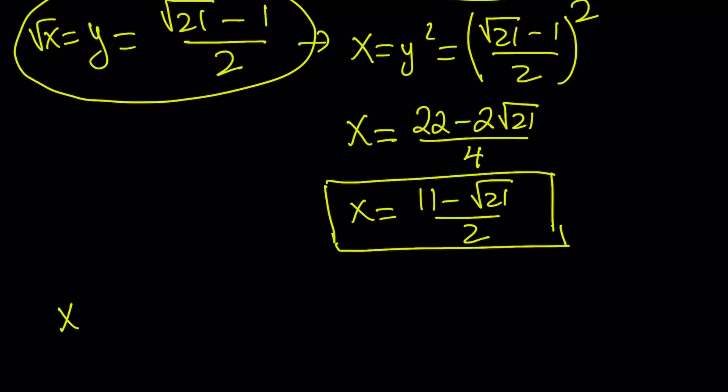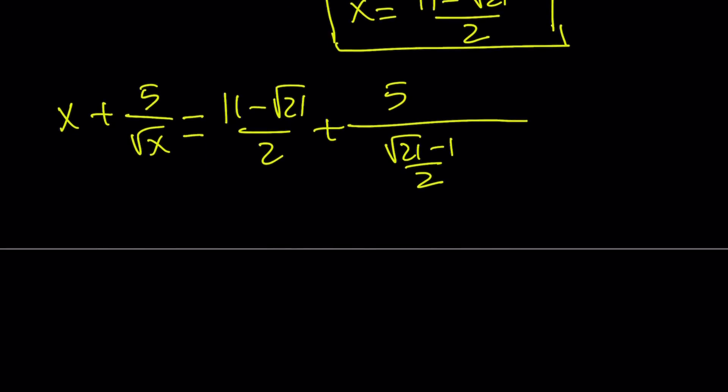I'm supposed to evaluate x plus 5 over square root of x. So I'm going to replace x with 11 minus root 21 over 2, and the square root of x with square root of 21 minus 1 divided by 2. We're going to flip-flop and then multiply these. And that's going to give us 11 minus root 21 over 2. 2 is going to be multiplied by 5, and then that's going to give me 10 divided by square root of 21 minus 1.